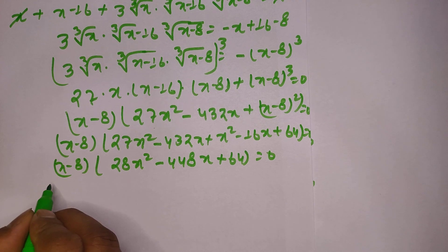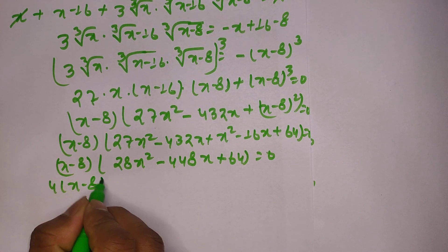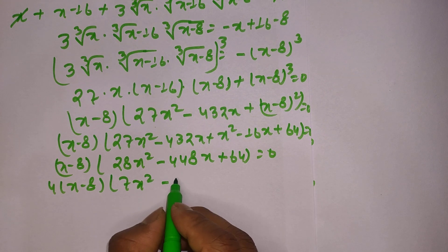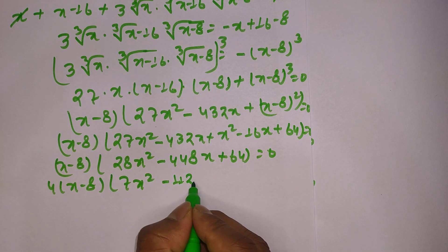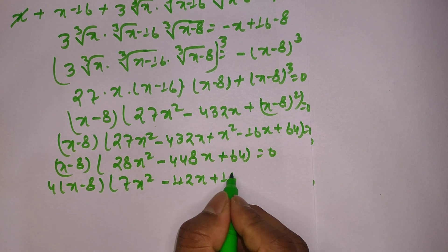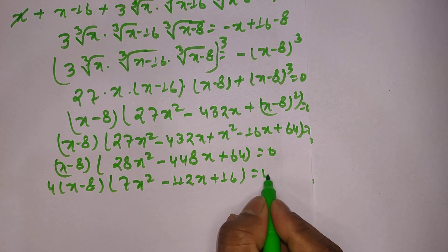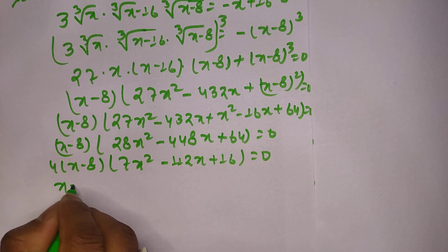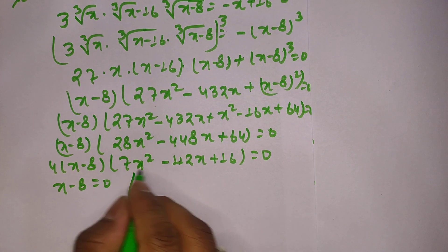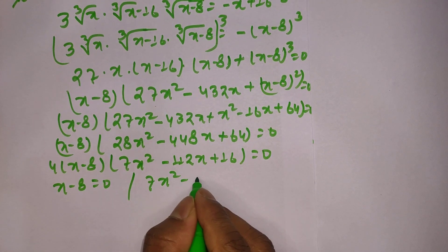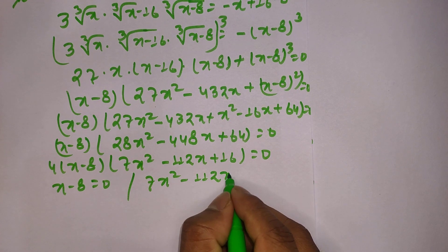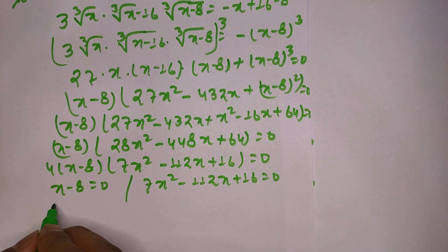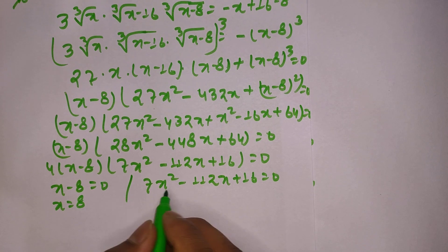Taking 4 as common from the quadratic gives us 7x² minus 112x plus 16 equals 0. So there are two cases: either x minus 8 equals 0, giving x equals 8, or the quadratic 7x² minus 112x plus 16 equals 0.